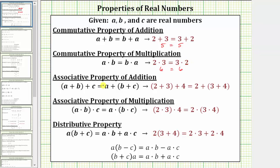Next, we have the associative property of addition, which is given as the quantity a plus b plus c equals a plus the quantity b plus c. Notice the associative property of addition deals with grouping terms in a sum. As an example, the quantity two plus three plus four equals two plus the quantity three plus four. To verify this, we would simplify both sides using the order of operations.